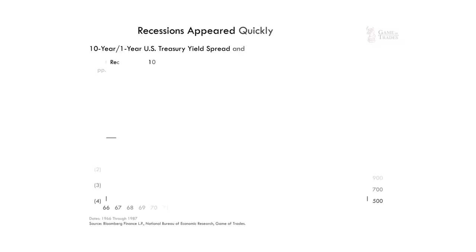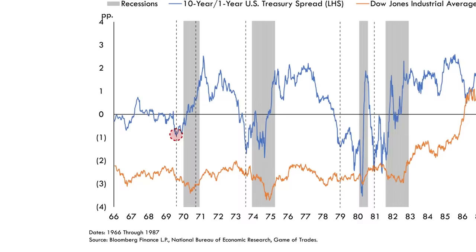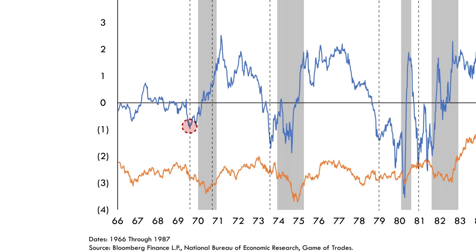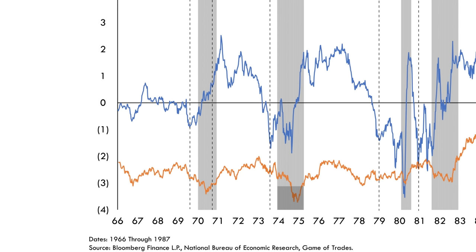In the 1970s and 1980s, we saw recessions appear very quickly after the yield curve inversion. In 1969, the yield curve inverted in June, and just five months later the recession materialized — and stocks continued to decline after the inversion. We saw the same thing in 1974: yield curve inversion, a few months later the recession appears, and the stock market declined the entire way through. At no point did you see a strong rally in equities, because the recession appeared so quickly that stocks had no room to move higher.